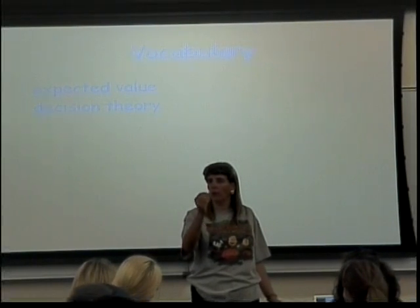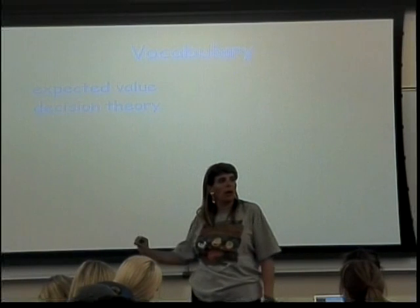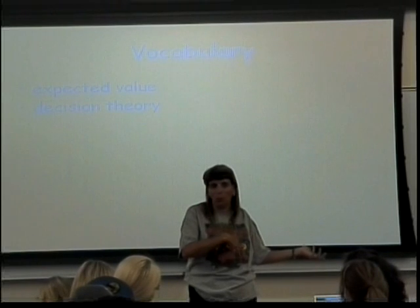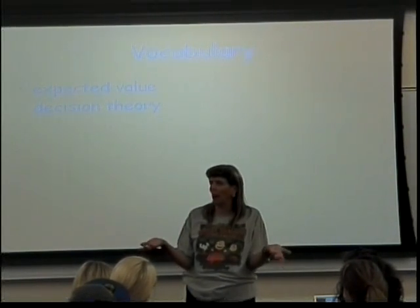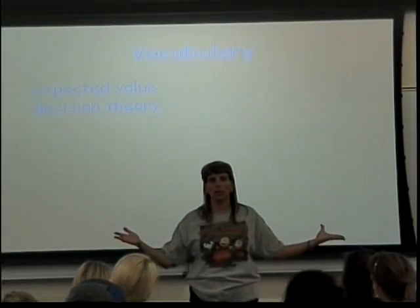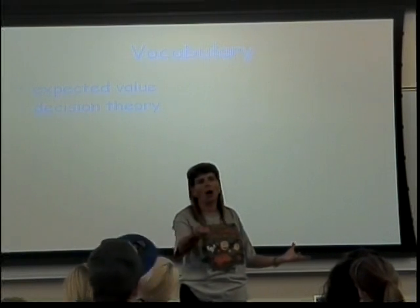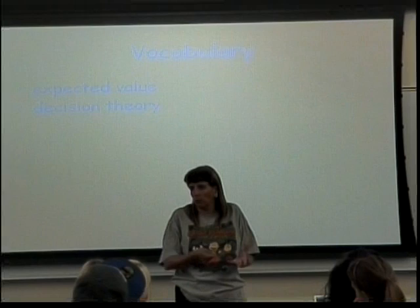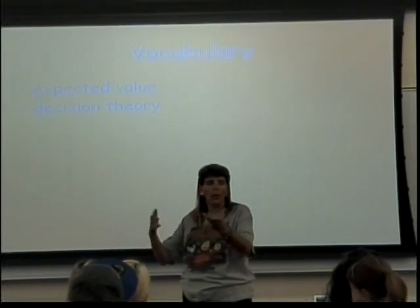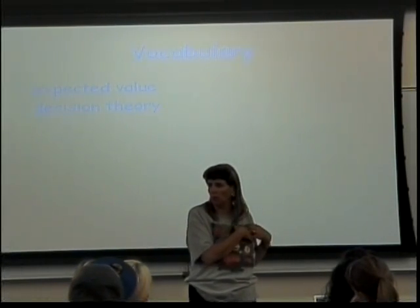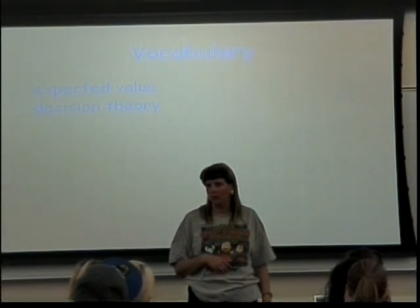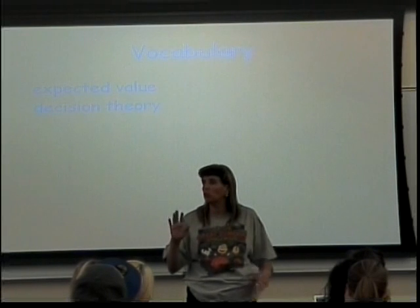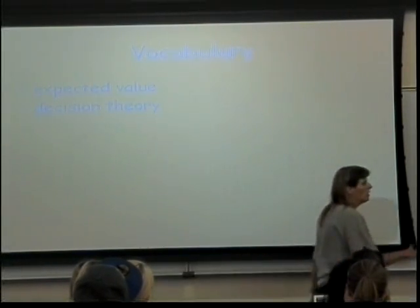A lot of the problems we're going to do have to do with either making money or not making money or paying money. Making money is positive. Paying for something is considered a negative value — you no longer have that money. For instance, if you're buying a lottery ticket, you pay a dollar, so the value of your lottery ticket is minus a dollar. If you happen to win a million dollar jackpot, the value of what you win is a million dollars, positive. But when you multiply those times the probability of winning and the probability of not winning, you find out that your expected value turns out to be negative, like 97 cents, because you're never expected to win very much in the long run.